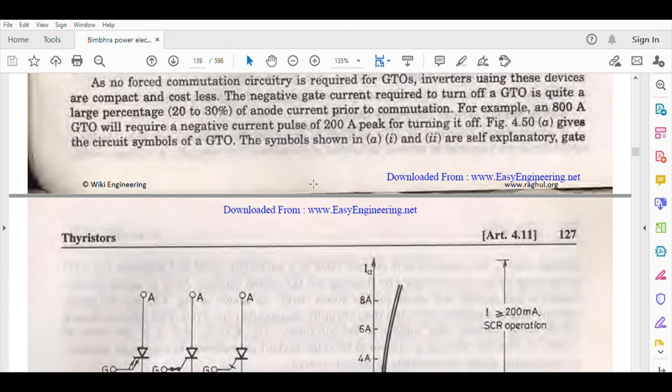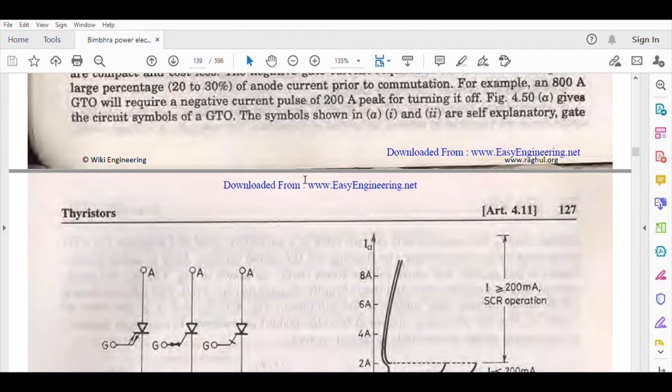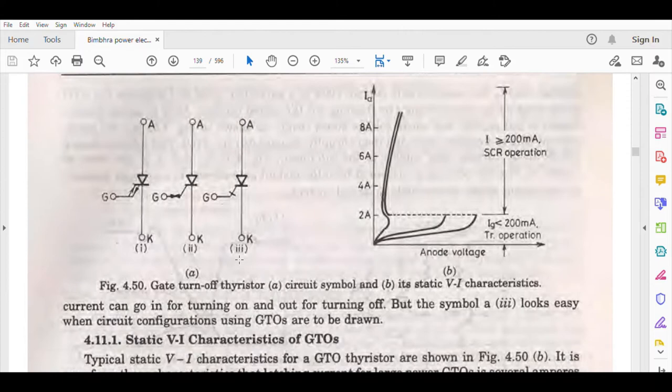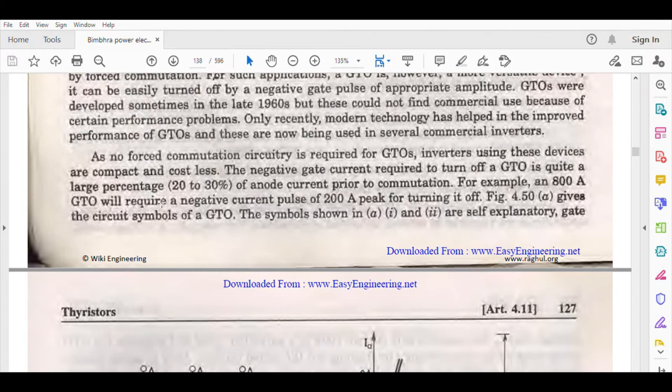Figure 4.50 shows the GTO construction. This is the GTO construction - one, two, three. You can see that the gate turn off circuit symbol is the same.